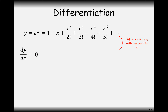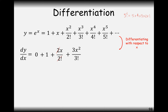The first term, 1, differentiates to 0. x differentiates to 1. For x squared over 2 factorial — 2 factorial is just 2 — the answer is 2x over 2 factorial, and those twos cancel. x cubed over 3 factorial gives 3x squared over 3 factorial. Continuing: 4x cubed over 4 factorial plus 5x to the 4 over 5 factorial, and that carries on up to infinity.